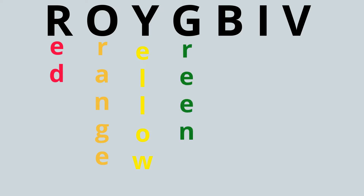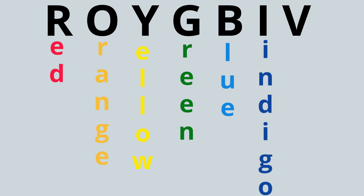ROYGBIV stands for red, orange, yellow, green, blue, indigo, violet.